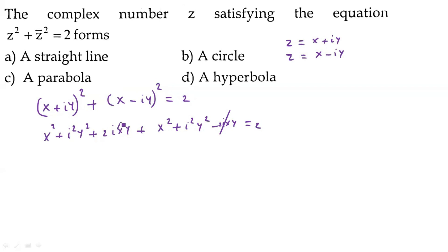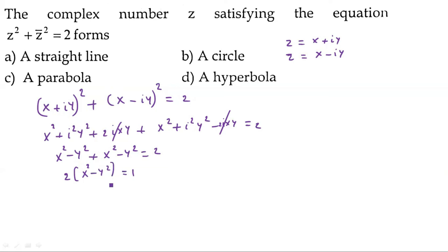Adding z² + z̄², the 2ixy terms cancel. We get 2x² + 2i²y² = 2. Since i² = -1, this becomes 2x² - 2y² = 2, which simplifies to x² - y² = 1. This is a hyperbola.